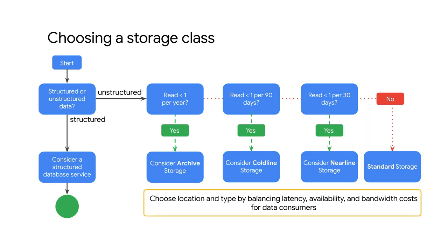You also want to take into account the location type. Use a region to help optimize latency and network bandwidth for data consumers such as analytics pipelines that are grouped in the same region.